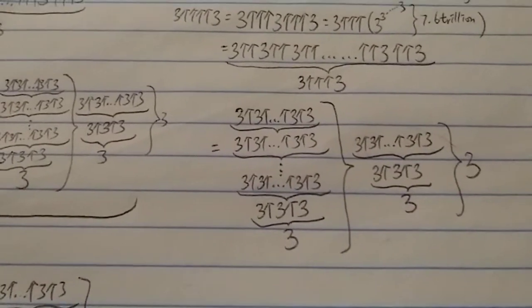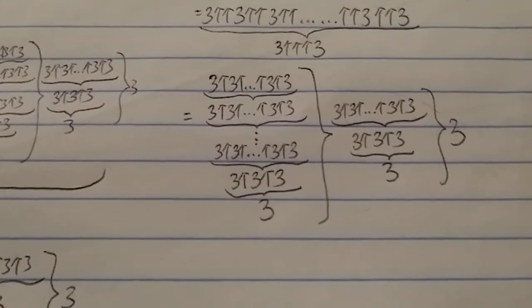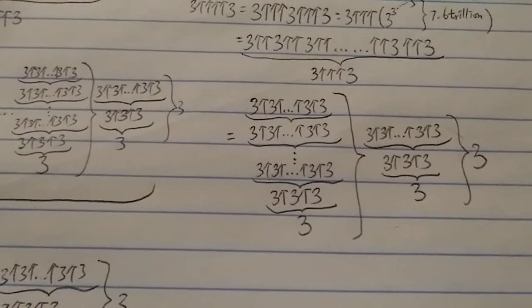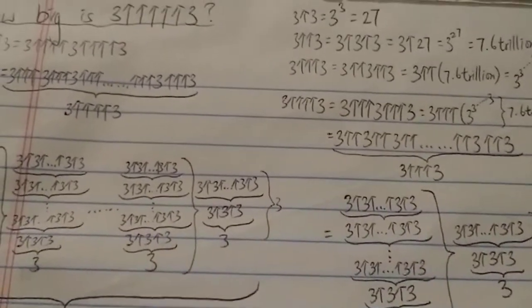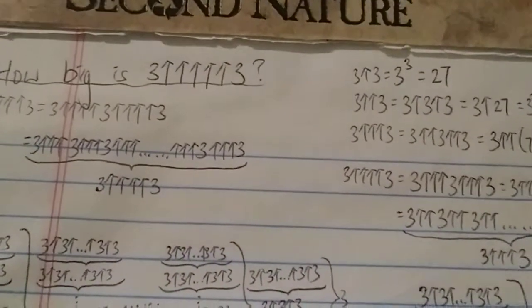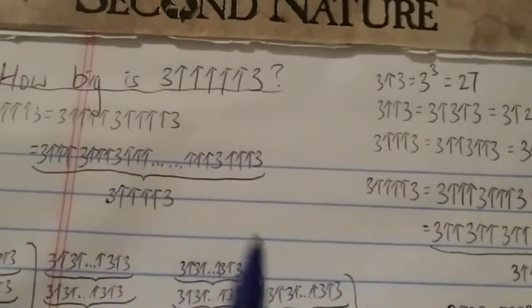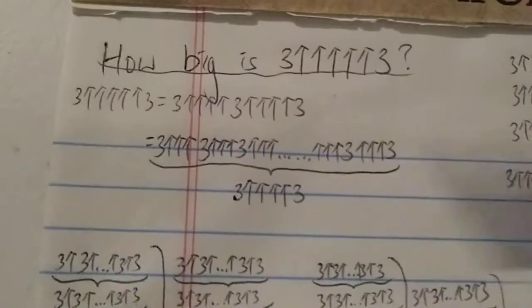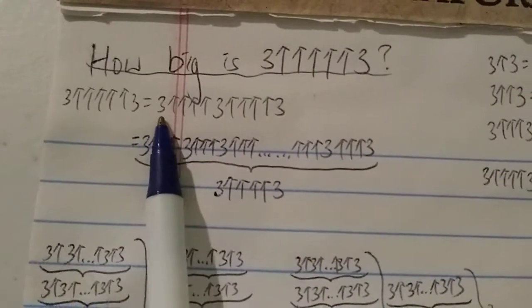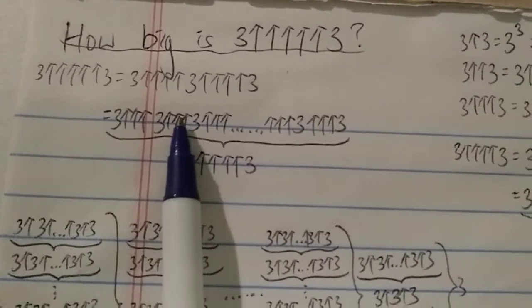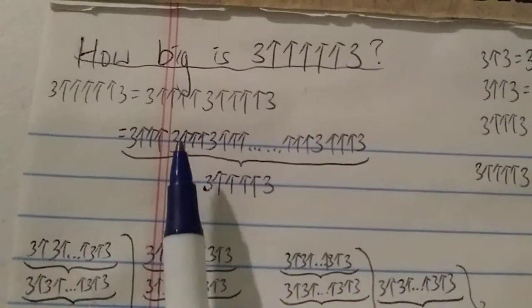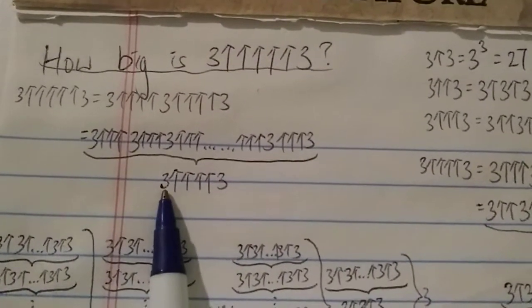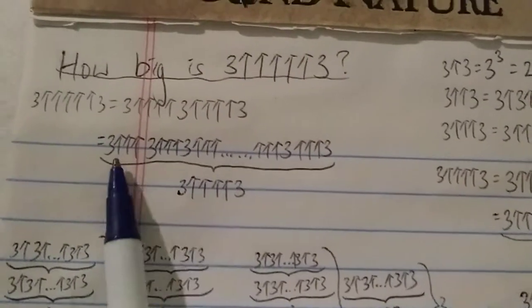Already it looks kind of complicated and most people cannot write this down or understand it right away, but if you take some time and pause the video, you can understand it. Now the million-dollar question — the three five-arrows three dollar question: how big is this number? Five arrows three, if you break it down, becomes three four-arrows three four-arrows three. And if you break it down into triple arrows, it becomes three triple-arrow three, triple-arrow three, triple-arrow three, and so on, for three four-arrows three number of threes.